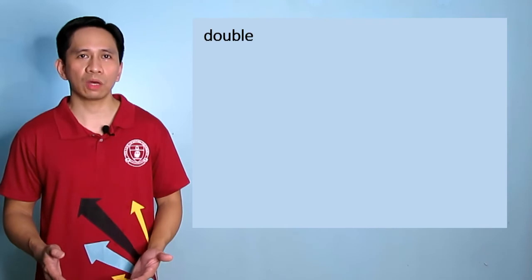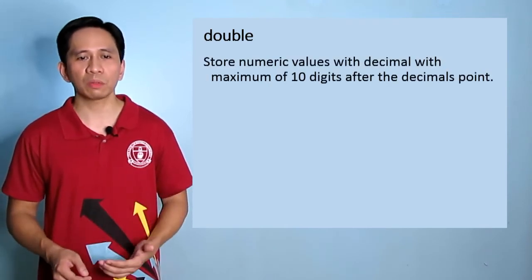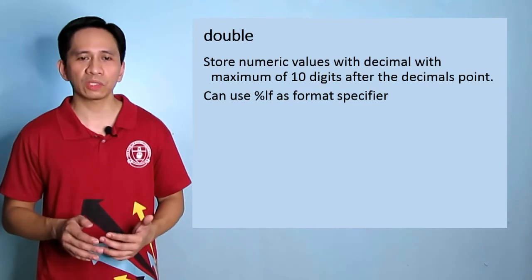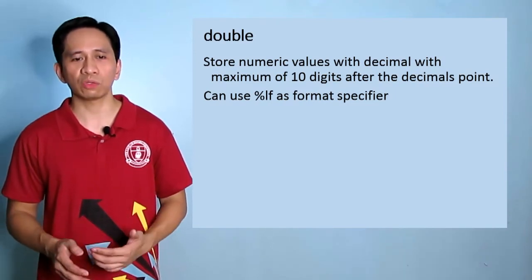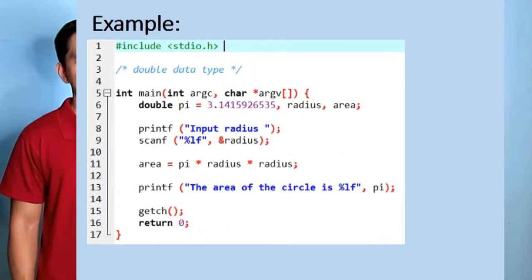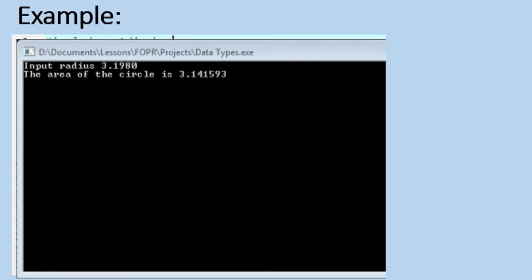The last data type is double. It stores numeric values with decimals, with a maximum of 10 digits after the decimal point. We can use %lf as format specifier for printf and scanf. Pause the video for a while and try this example. Running the application, we come up with this result. You'll notice that yes, it displays decimals, but still it has only 6 digits after the decimal point.